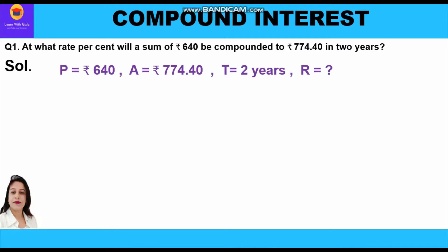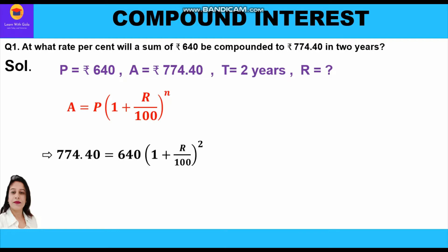Applying the formula: A is equal to P in bracket 1 plus r upon 100, whole raise to power n. Putting the values: 774.40 is equal to 640 into bracket 1 plus r upon 100 whole square, because time period is two years so n will be 2. Further we shall cross multiply and write 774.40 upon 640 is equal to 1 plus r upon 100 whole square.